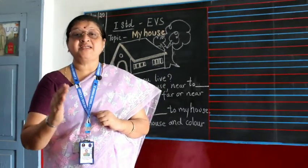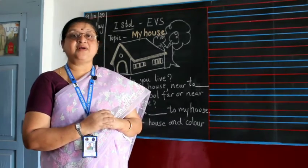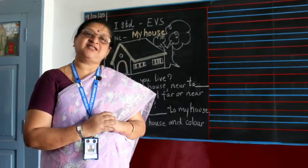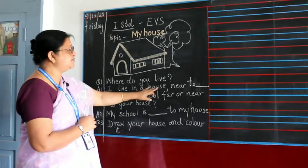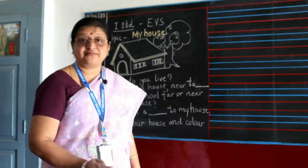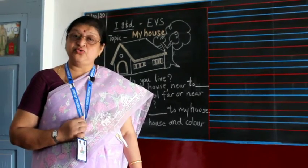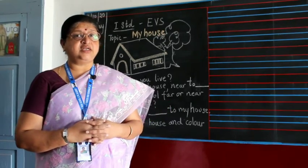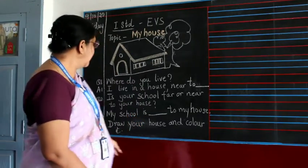A house is by the side of the road — we cannot build a house on the road. It can be in any locality: some are in the town, some in a well-planned city. You must write: I live in a house near to... Ask your parents if it is near to a post office, supermarket, school, church, or temple. You should know so you are not lost giving directions.